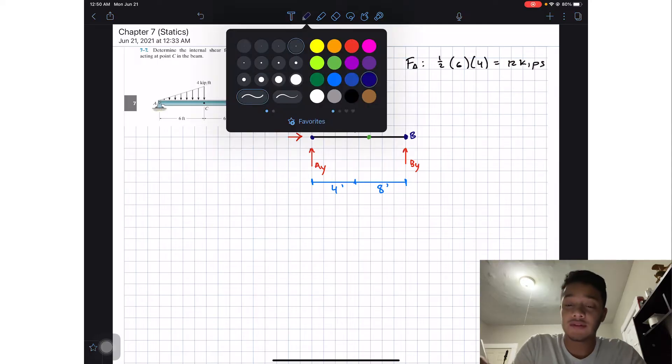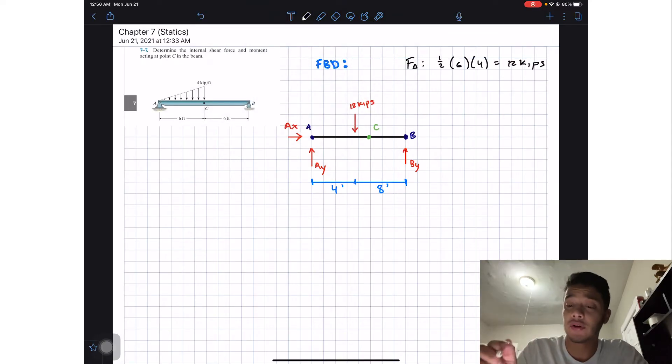Now we're gonna leave this free body diagram here on the side and we're going to apply the method of sections. So we're going to section at point C and we gotta say on which side should I work? As you can see, my right side has only one unknown, it doesn't even have these 12 kilopounds.